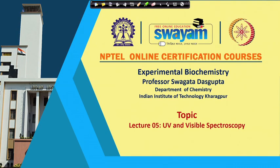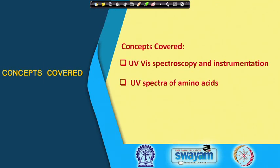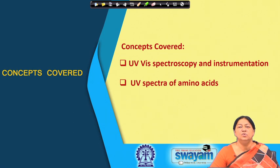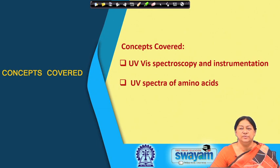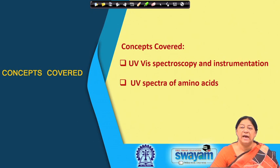In this lecture we will be starting our discussion on spectroscopy. The first lecture will be on UV and visible spectroscopy and the second lecture will be related to fluorescence spectroscopy. The concepts we are going to cover include UV visible spectroscopy, the instrumentation associated with it, the UV spectra of amino acids, and how we can use UV spectra for specific studies. We will also see how spectroscopy can be used to understand structural changes of proteins related to both UV visible and fluorescence.